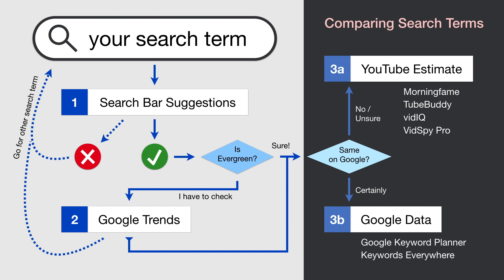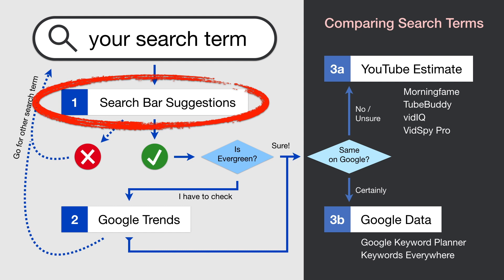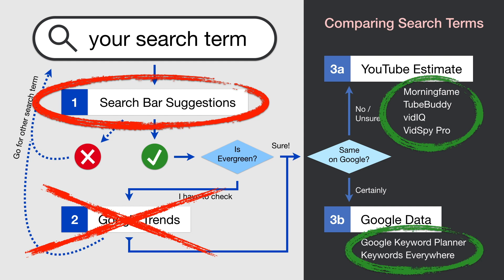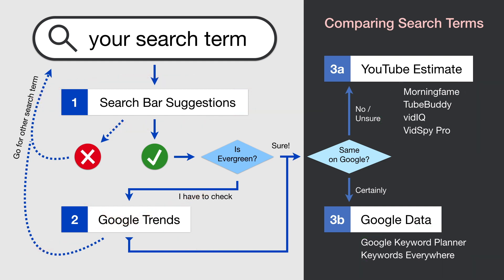You may wonder why I added the search bar suggestions in step one. We could just always skip Google Trends and use only one tool in step three. But all the tools have their flaws — they can fail us. So we need the combination of tools to get a dependable search volume for our search term. For that reason, I'm helping you with all three steps with Morningfame. It uses the search bar suggestions, Google Trends, and a YouTube estimate. It's not that complicated in the end.